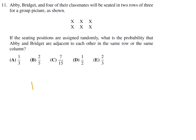For probability questions, we have a numerator and denominator. The denominator is the total number of ways, so that's 6 times 5 times 4 times 3 times 2 times 1. We have six choices for this seat, then 5 for that, and so on — it's 6! (6 factorial).